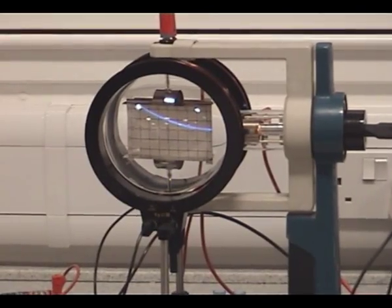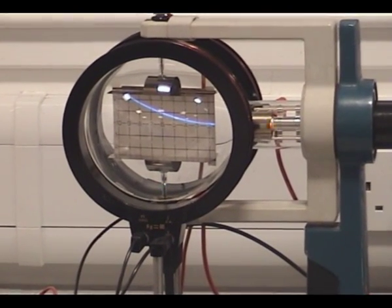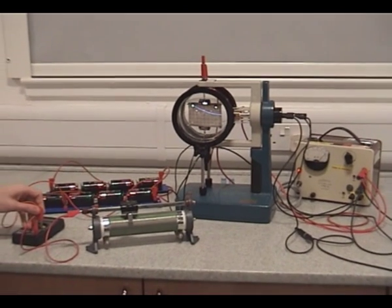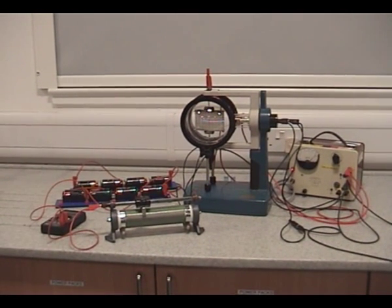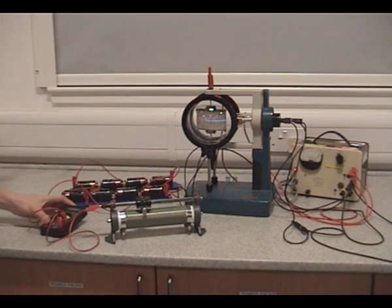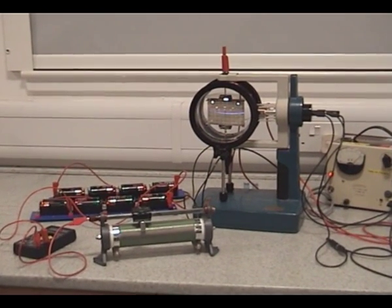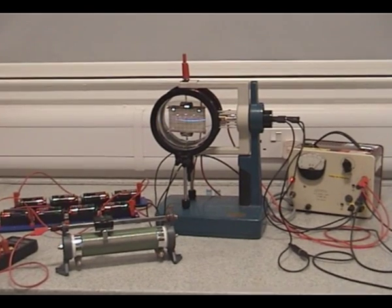There's the beam of electrons being deflected upward towards the positive plate. Now if we turn on the current to the magnetic field, which is a DC current of 0.35 amps through the Helmholtz coils.